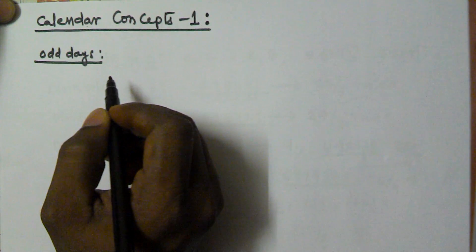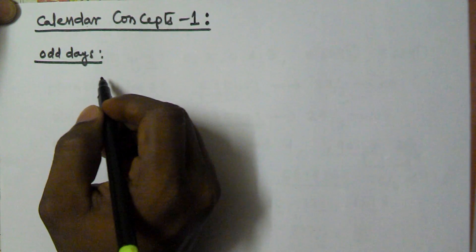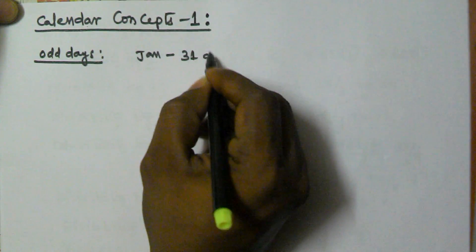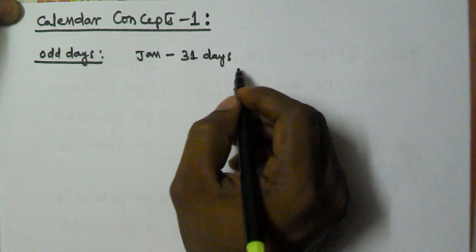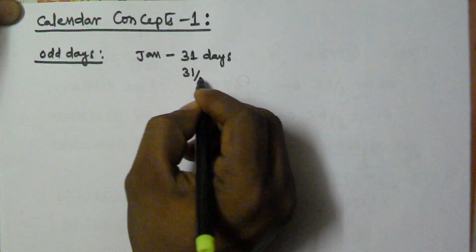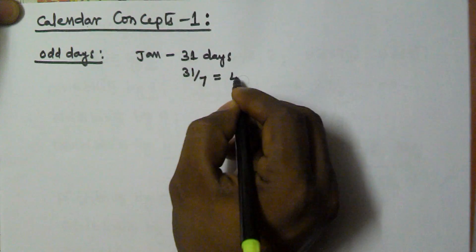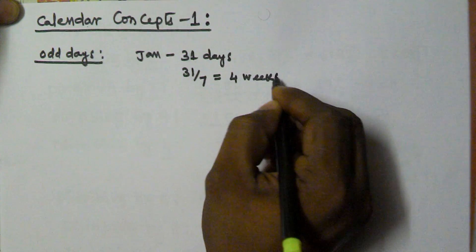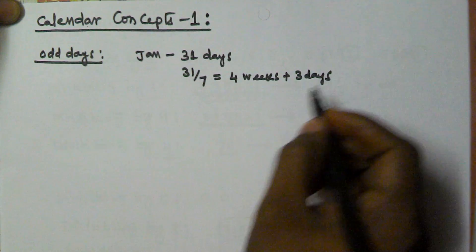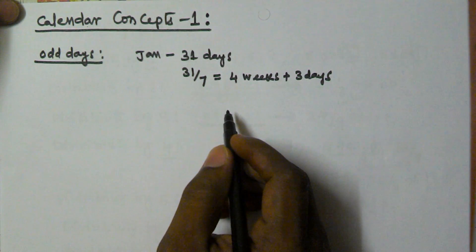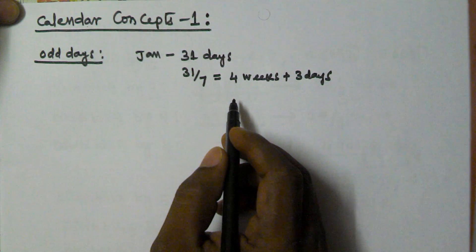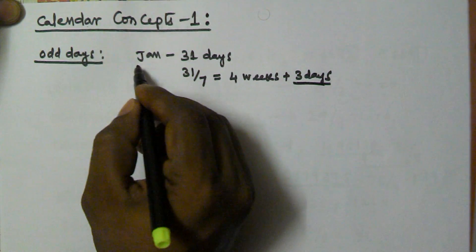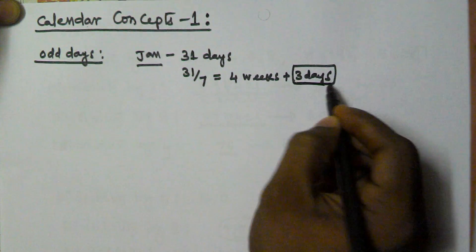For example, if you take January, how many days do we have? 31 days. To find the complete weeks we divide 31 by 7. So that is 31 by 7, and we get 4 point something, meaning 4 complete weeks plus 3 days. According to the odd days definition, it is complete weeks plus remaining days — those remaining days are called as odd days. That means the January month is going to have 3 odd days.